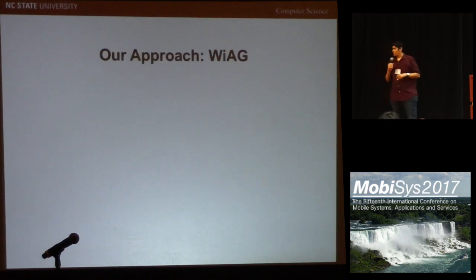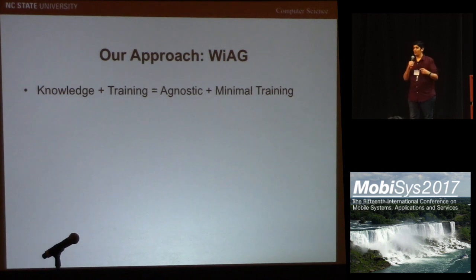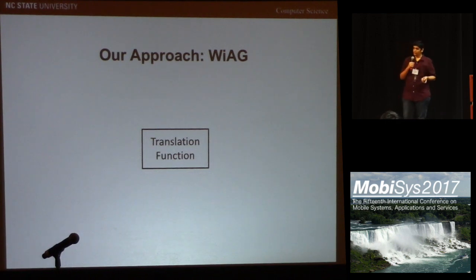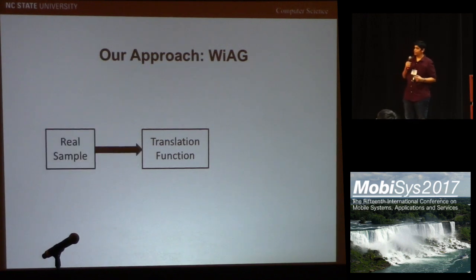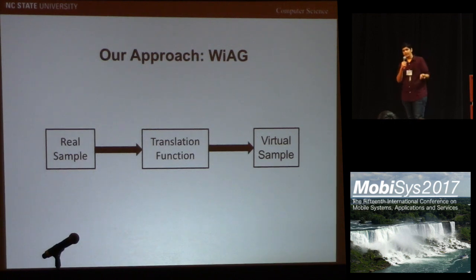Here is our approach, WiAct, which is Wi-Fi-based gesture recognition. We ask the question: can we combine training from the user with the technical know-how of wireless signal behavior in the environment, to make the system configuration-agnostic and reduce the effort required from the user? The key component of our system is the translation function. The role of the translation function is to reduce the training effort required. It takes as input a real sample at a known configuration and translates it into a virtual sample at any desired configuration, which is very identical to what we would observe when the user is standing at that configuration performing the same gesture.